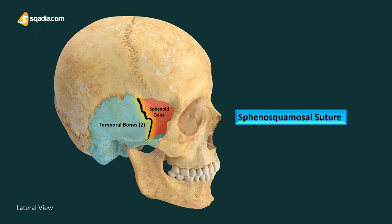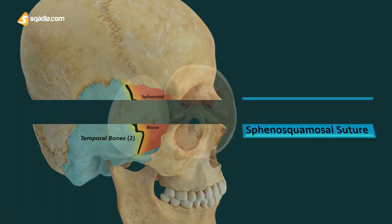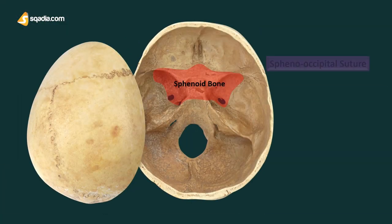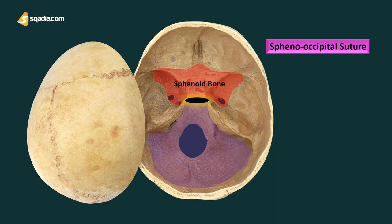The sphenooccipital suture is with the occipital bone and can be seen when the skull is cut cross-sectionally. This suture is particularly useful for forensic assessment of skeletal remains. Another name for it is the basioccipital synchondrosis — a primary cartilaginous joint found in developing skeletons — and it disappears after the age of 25.